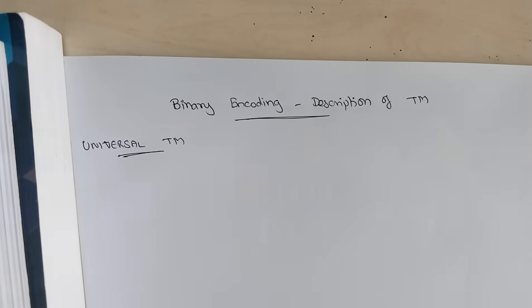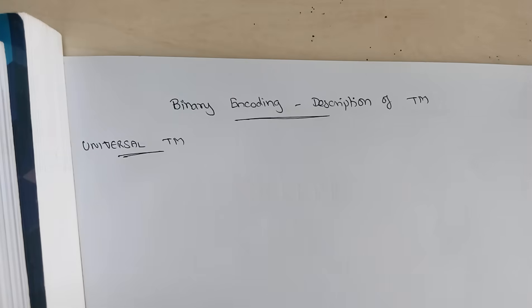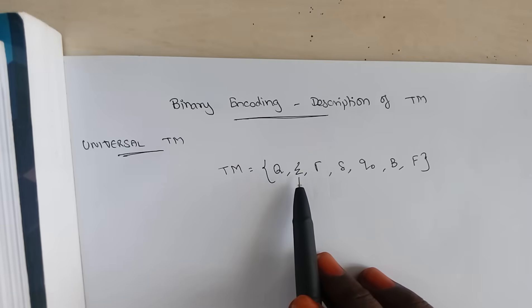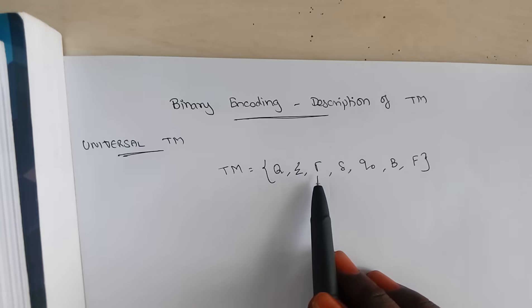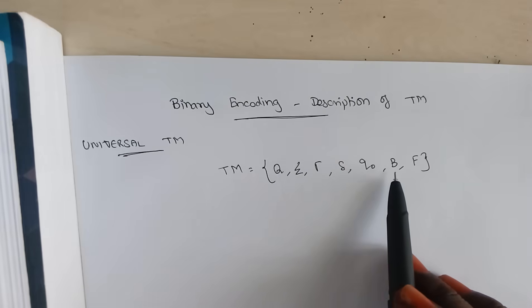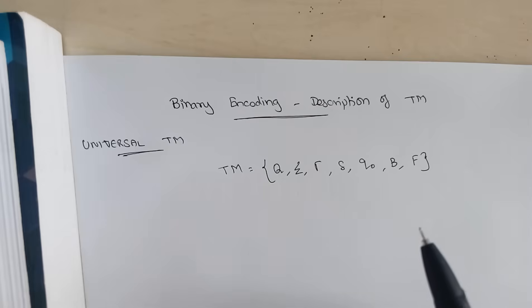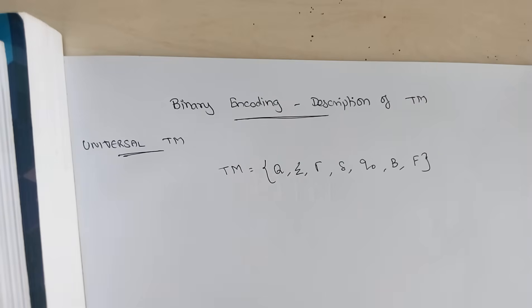The Universal Turing Machine has the capability of simulating other Turing machines inside it. The input given to the Universal Turing Machine is a binary encoded format of a Turing machine. I'll give you a simple example of how to encode a Turing machine in binary. This is the description of a Turing machine: set of states, set of input symbols, symbols that can be represented on the tape, delta is the transition function, q0 is the starting state, b is the blank representation, and F is the set of final states.